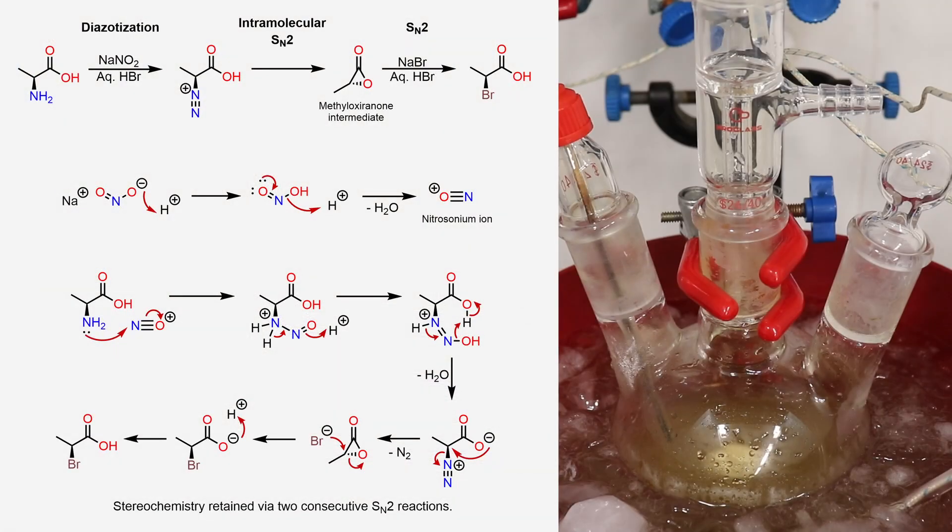Well, there happens to be another intermediate in this reaction. Once the diazonium forms, it can be attacked intramolecularly by the adjacent carboxylate group. This is an SN2 reaction, which inverts the stereocenter, and forms this three-membered ring.